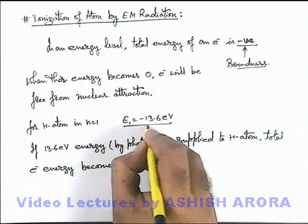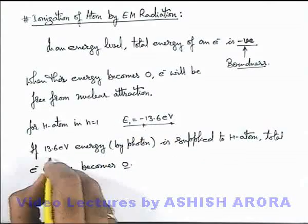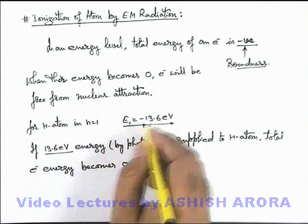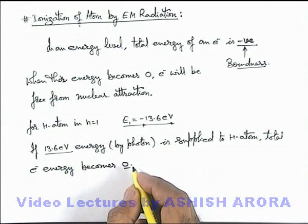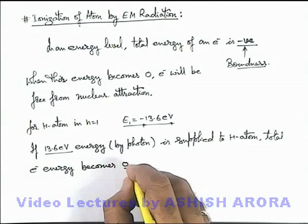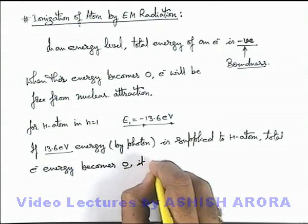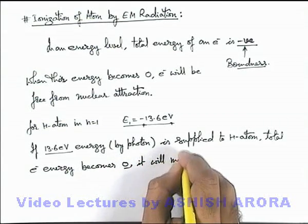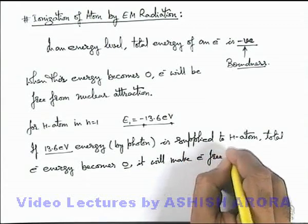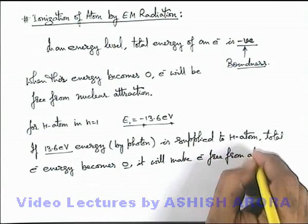Because its earlier energy is minus 13.6 eV and we have supplied 13.6 eV, so total energy will be zero, and here we can say it will make electron free from atom.